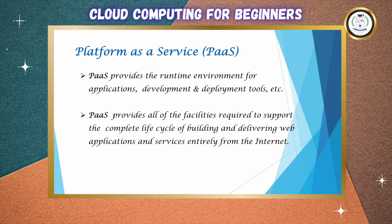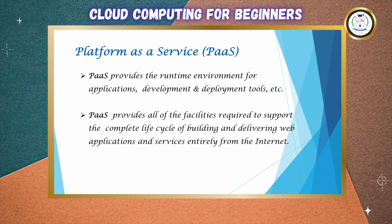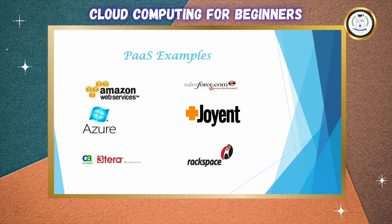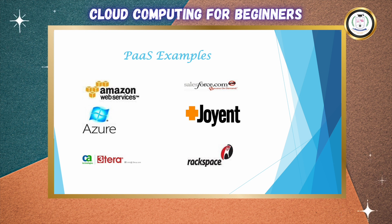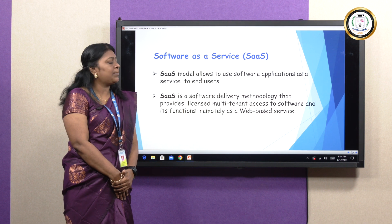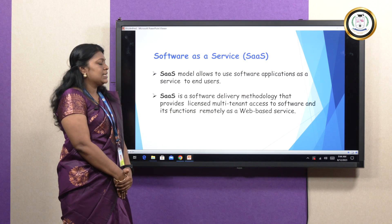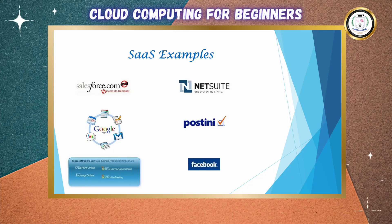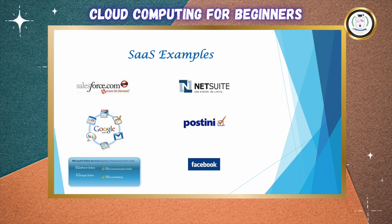Platform as a Service — in this, we hire only platforms, meaning a runtime environment. Real-time examples are AWS, Azure, Joyent, Rackspace, and Salesforce. Software as a Service — here, we can get all software applications through the cloud. Examples for SaaS are Google, Salesforce, and Facebook.